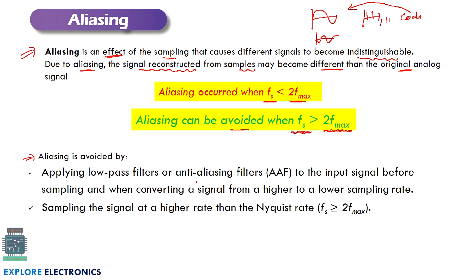We can avoid aliasing by applying a low-pass filter — generally called an anti-aliasing filter — to the input signal before sampling and when converting a signal from a higher to a lower sampling rate. Similarly, sampling the signal at a rate higher than the Nyquist rate is also a method to avoid aliasing. These two are the key points to remember to avoid aliasing while sampling and quantizing an AC signal.